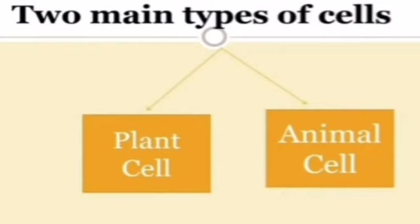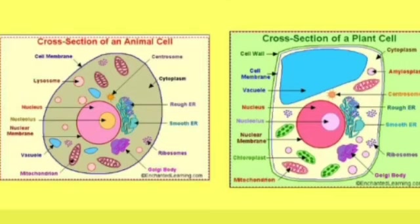There are two main types of cells: animal cells and plant cells. These cells consist of various types of membrane-bound cell organelles. Plant cells have a definite shape due to the presence of cell wall around them. Besides, unlike animal cells, plant cells contain a single large vacuole. All these cells are known as eukaryotic cells.